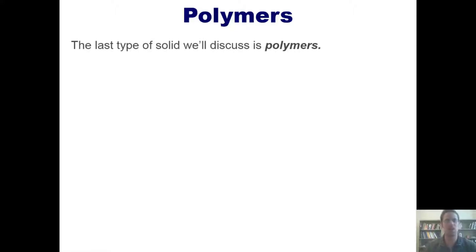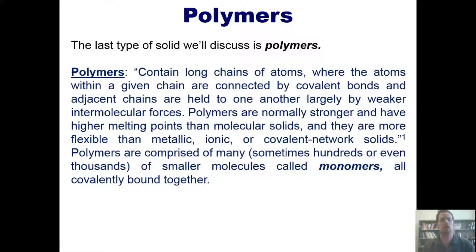So with that said, we'll get back to talking about polymers, which happens to be the last type of solid that we'll discuss in this chapter. According to our text, polymers contain long chains of atoms, where the atoms within a given chain are connected by covalent bonds, and adjacent chains are held to one another largely by weaker intermolecular forces. Polymers are normally stronger and have higher melting points than molecular solids, and they are more flexible than metallic, ionic, or covalent network solids.